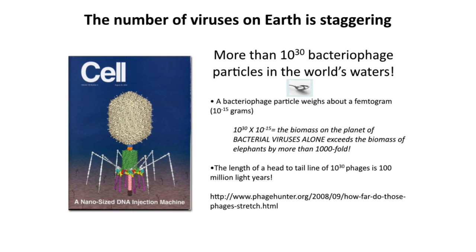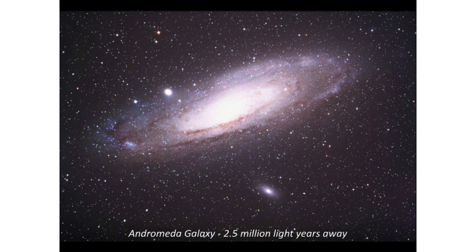That's amazing, because these are things you can't see, yet their total mass is more than a thousandfold that of elephants. If you lined up these 10 to the 30th viruses head to tail, they would stretch 100 million light years. The closest galaxy, Andromeda, is just two and a half million light years away — so this line of viruses would go far beyond that. I'm telling you this to emphasize how many viruses are on this planet.